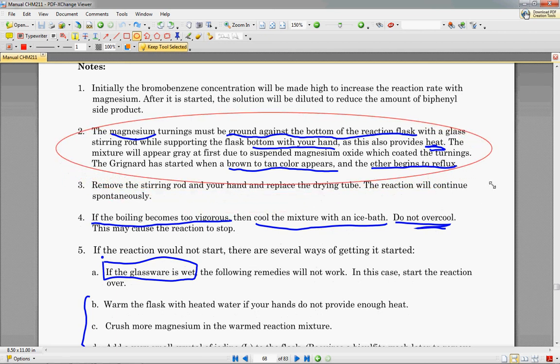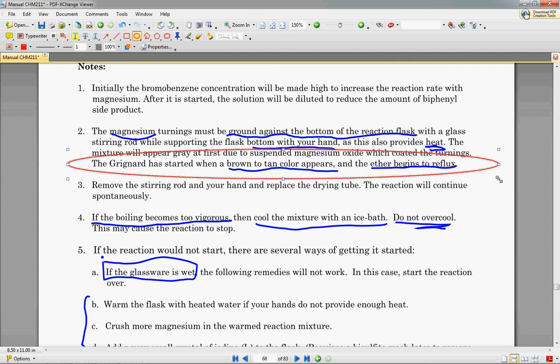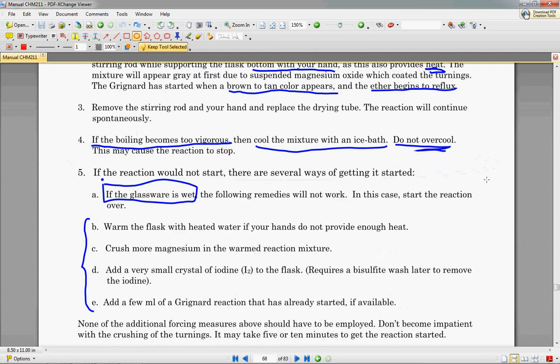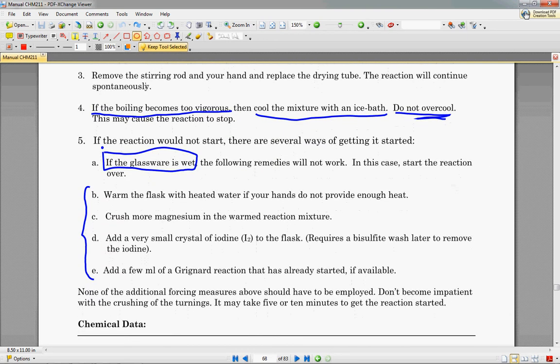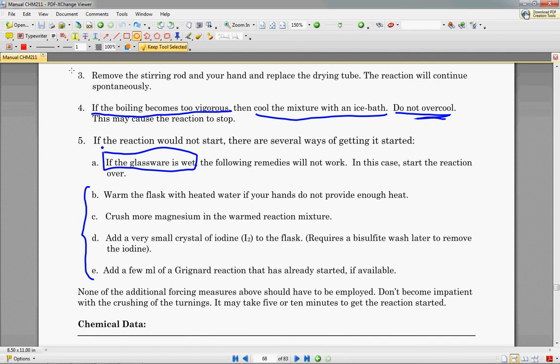The magnesium turnings must be ground against the bottom of the reaction flask with a stirring rod while supporting the glass with your bottom hand. The reason your bottom hand is going to be on there is to provide some sort of heat in order for the reaction to begin. So, once the Grignard reaction has started, a brown to tan color appears, and the ether begins to reflux. What that means is it's going to look like it's boiling, and that's because it's a highly exothermic reaction, and it's actually going to be boiling. So, it's going to get really hot, so you want to remove your hand once it starts getting pretty toasty in there.